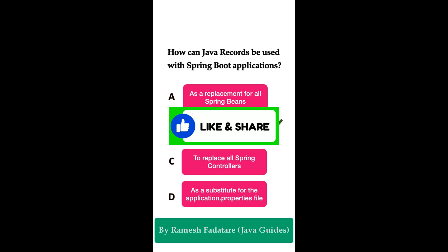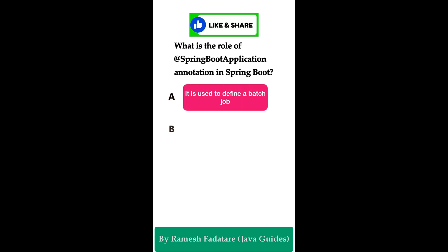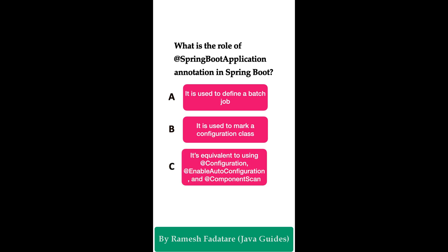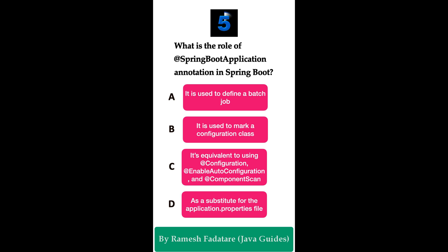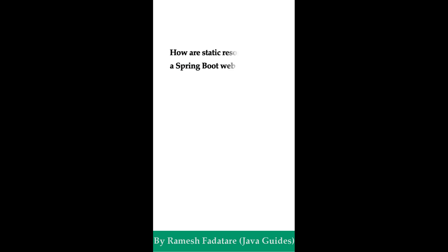What is the role of @SpringBootApplication annotation in Spring Boot? Option A: to define a batch job. Option B: to mark a configuration class. Option C: it is equivalent to using @Configuration, @EnableAutoConfiguration, and @ComponentScan annotations. Option D: as a substitute for the application.properties file. The correct answer is option C. The @SpringBootApplication annotation is a combination of three important annotations: @Configuration, @EnableAutoConfiguration, and @ComponentScan. It marks the main entry point class of a Spring Boot application and uses @EnableAutoConfiguration to automatically configure the application based on the dependencies included in the project.